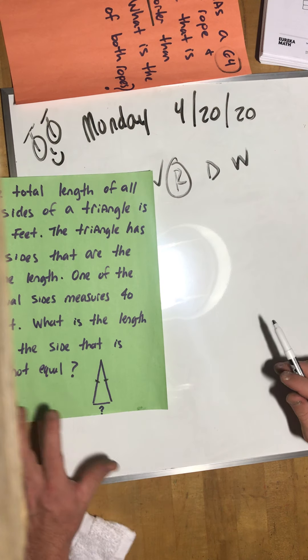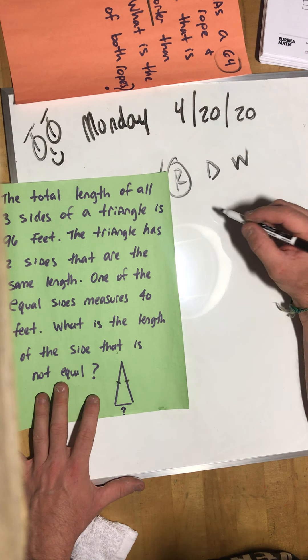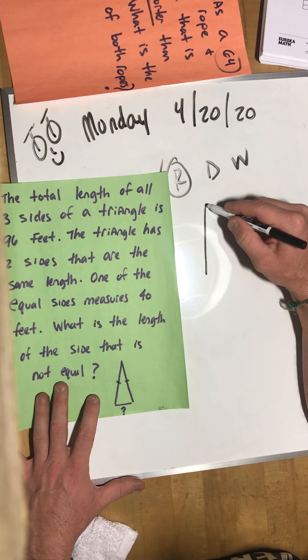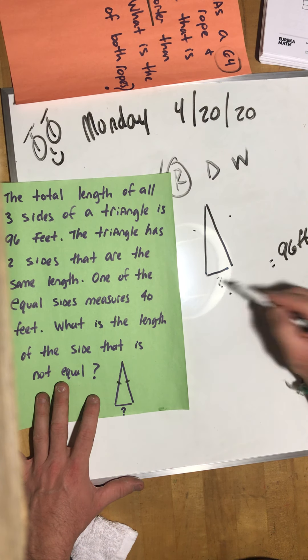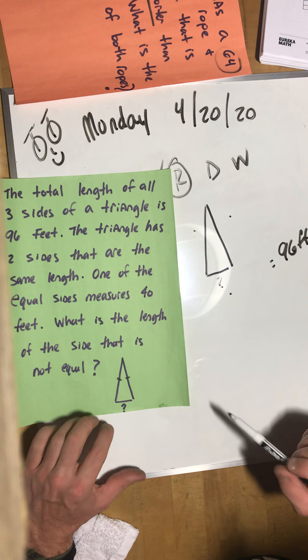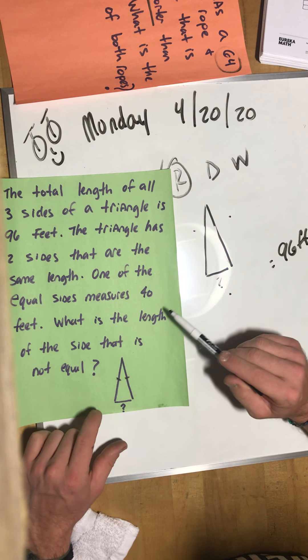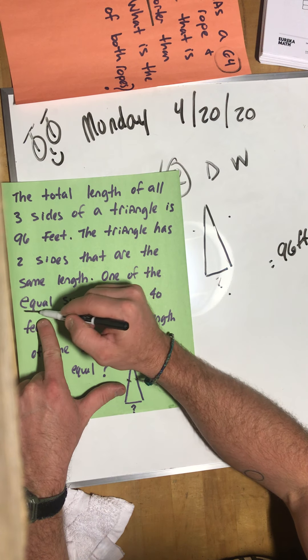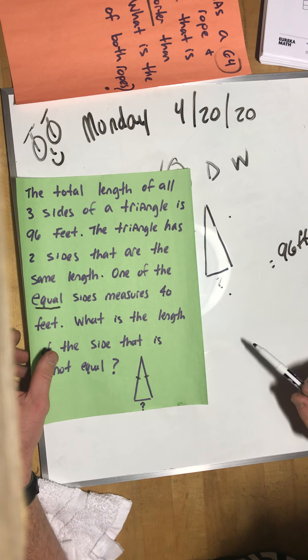The total length of all three sides of a triangle is 96 feet. The triangle has two sides that are the same length and one of the equal sides measures 40 feet. What is the length of the side that is not equal? So here's our triangle. We know that both of these are the same. Let's draw it out. RDW - we did the reading part, now we're starting to draw it out.